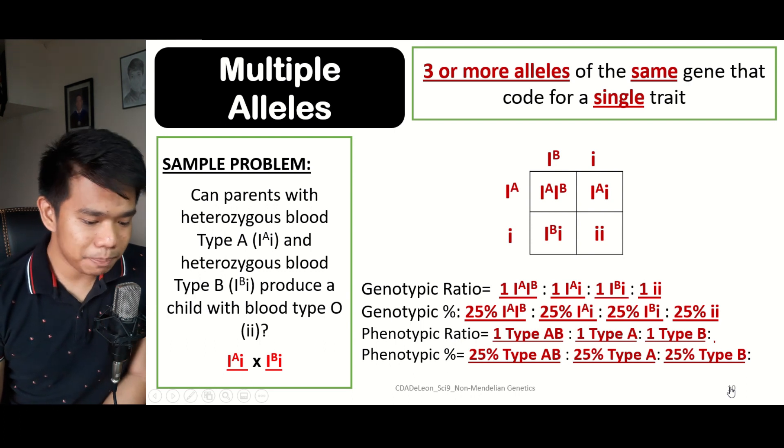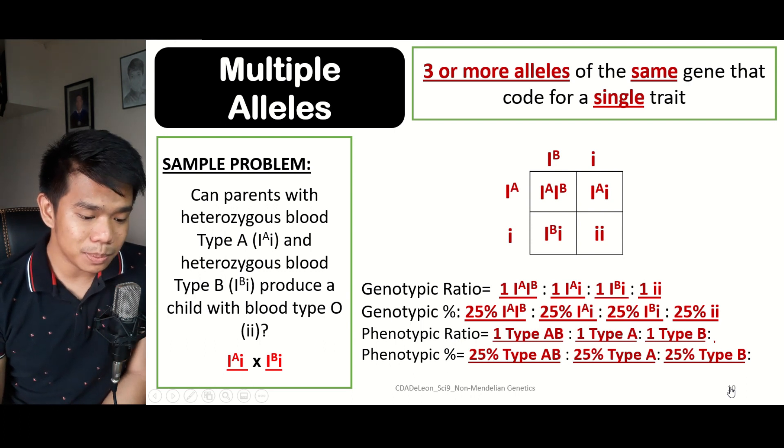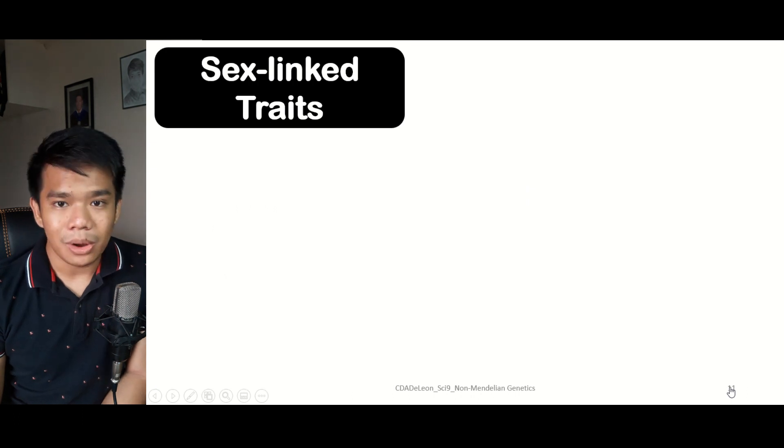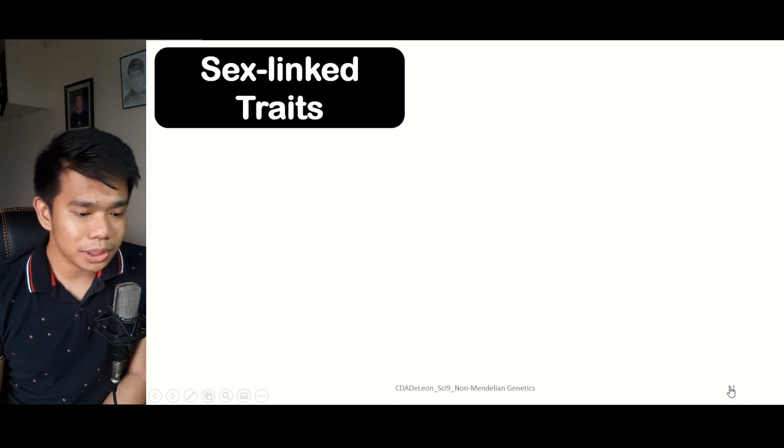Two small letter i's represents type O. Therefore, in this problem there is a probability of having an offspring or child with blood type O.